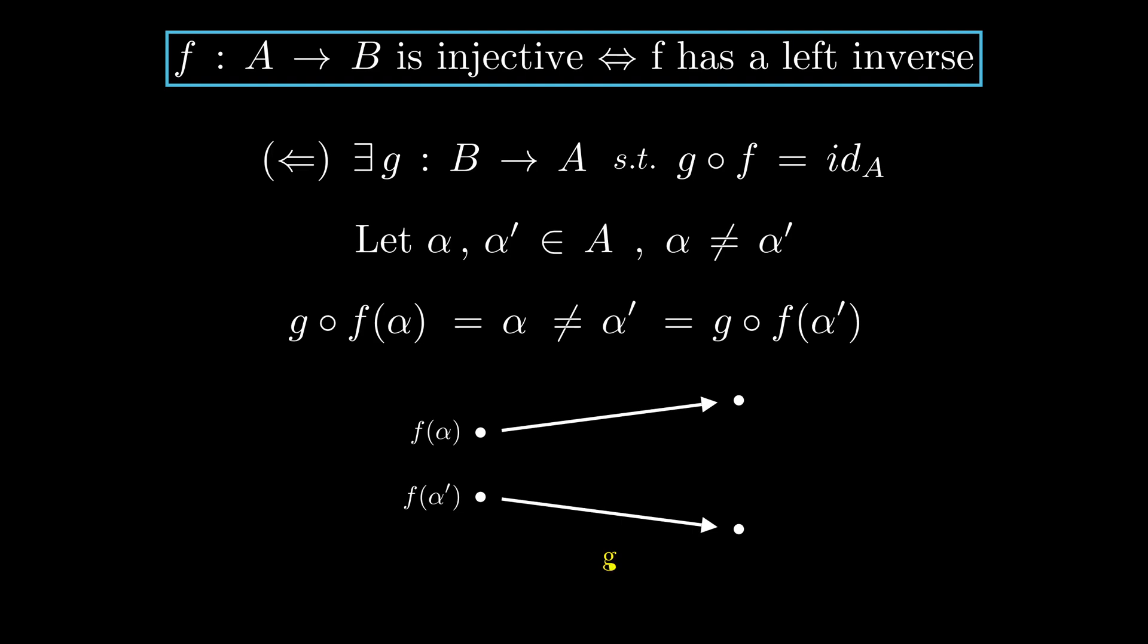We see how G sends F of alpha and F of alpha prime to different elements. So, they are also different by the basic function rule. I am not going to prove the rest of it because it is easy and worth trying yourself.